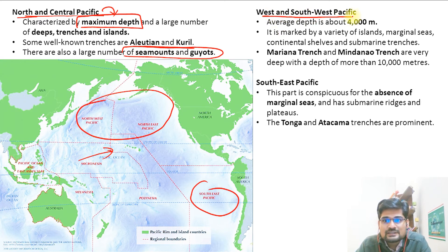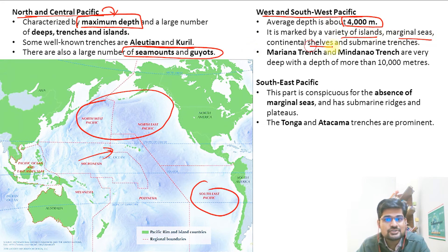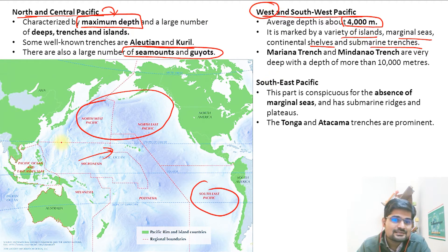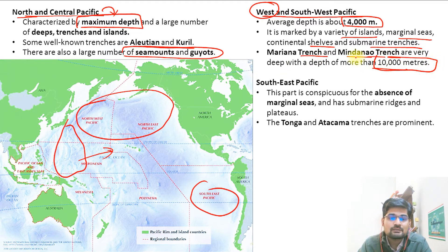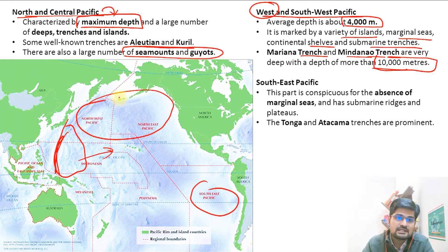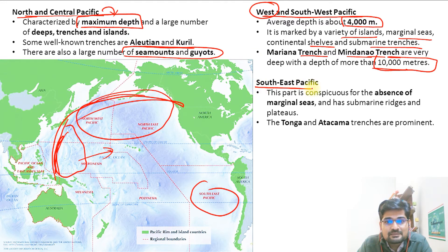In the West and South-West Pacific, the average depth is about 4,000 meters. It is marked by a variety of islands, marginal seas, continental shelves, and submarine trenches. This is where the Mariana Trench and the Mindanao Trench are located, with depths in the range of about 10,000 to 11,000 meters — some of the greatest depths on Earth.